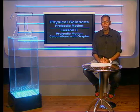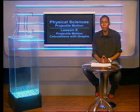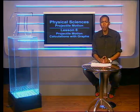Hello grade 12s. In this lesson we will look at some questions related to two graphs of motion. These graphs are simplified to make things easier for us to see patterns. For example, the acceleration due to gravity is taken as 10 rather than 9.8 meters per second squared.